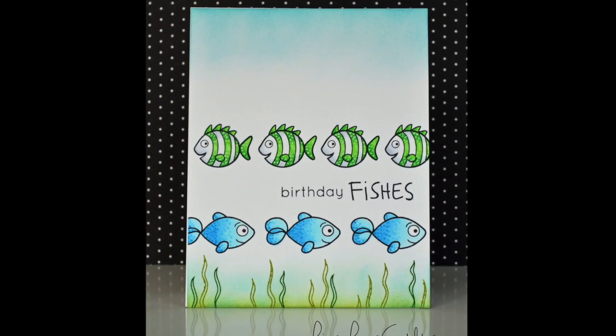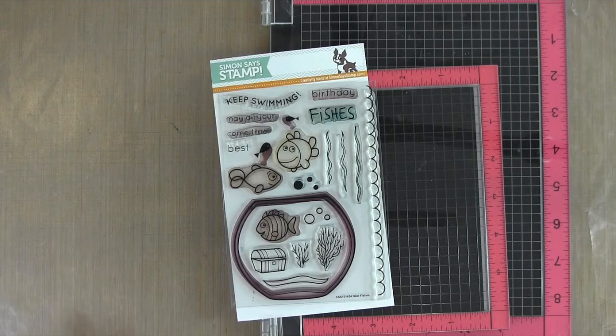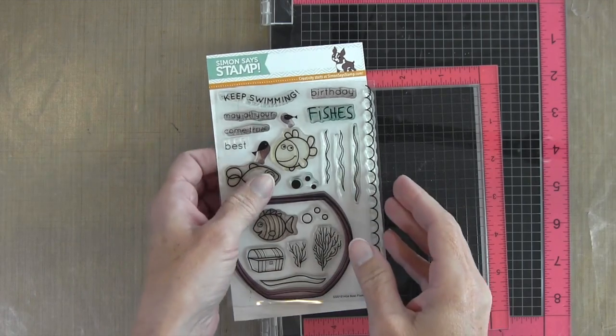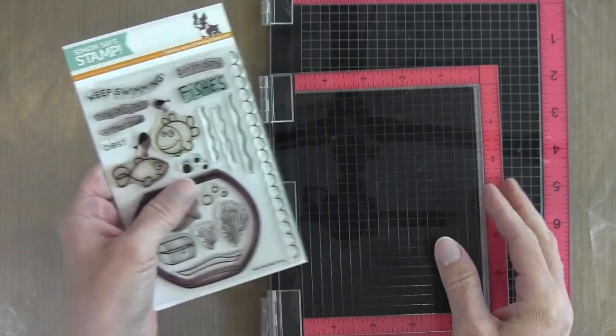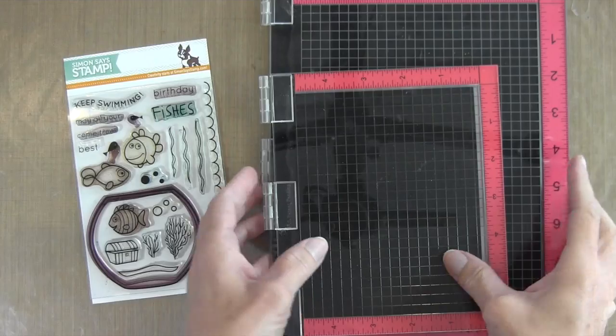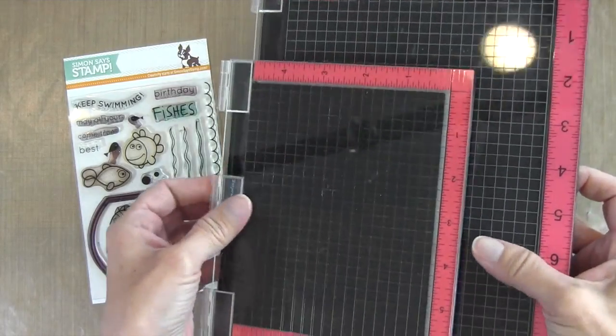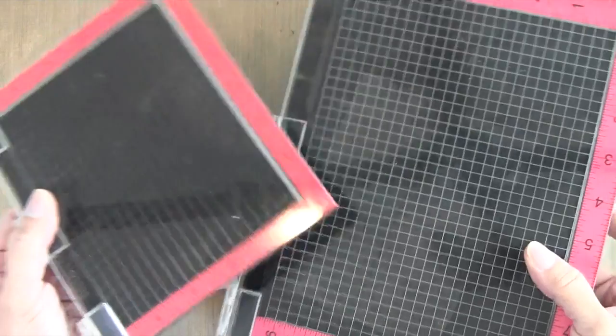Hi everyone, it's Darlene. Welcome back for another card video. Today's card uses the Best Fishes set by Simon Says Stamp, one of my very favorites I've used many times. I'm also using these two MISTIs and I am giving away a mini MISTI today, so be sure to check out the blog for details.